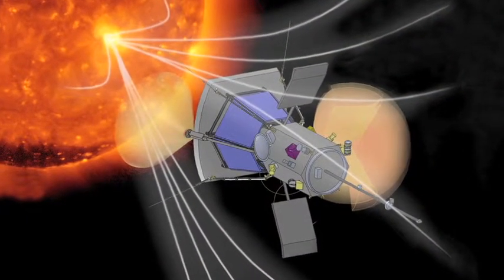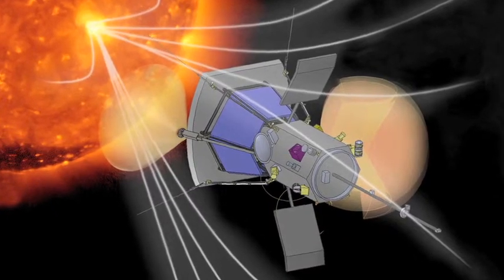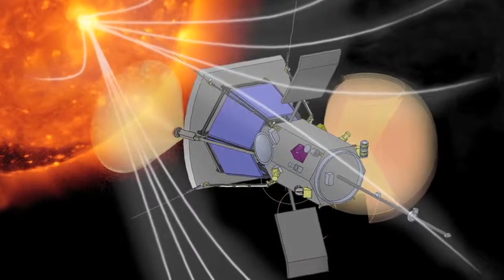Partnering with the Harvard-Smithsonian Center for Astrophysics, we submitted a proposal for a suite of instruments to study the solar wind. In particular at Marshall, we're going to develop grids that will be used as detectors in the Faraday Cup that will be used to measure electrons, helium nuclei, and protons in the sun's solar wind.